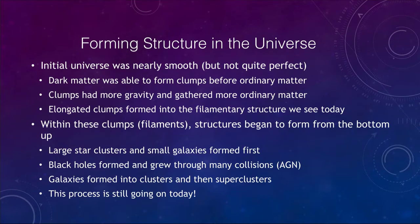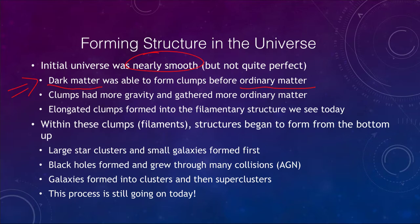So how do we think this structure formed? The initial universe was very smooth — not perfectly smooth, but almost uniformly spread out, as we see in the background radiation today. However, early on, dark matter was able to form clumps before ordinary matter could. These clumps had more gravity and then gathered more ordinary matter and dark matter into them, eventually forming the filamentary structures we see in the universe today.